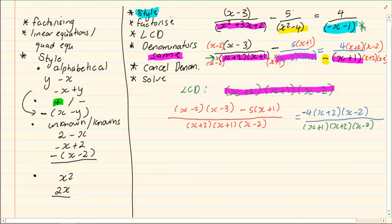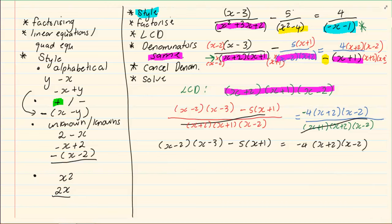Now, because the LCDs are the same, we can now cancel the denominators. Leaving us with x minus 2 into x minus 3 minus 5 into x plus 1 is equal to minus 4 into x plus 2, x minus 2. So, you are now left with a quadratic equation. Quadratic equation says that you must make it equal to 0. But if there are more than one term, then we're going to first get rid of all the brackets. So, using your kitty cat or foil, I'm going to have x squared minus 5x plus 6.